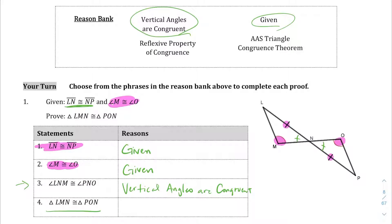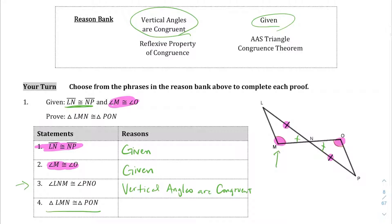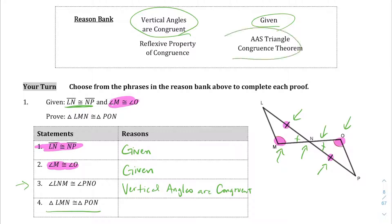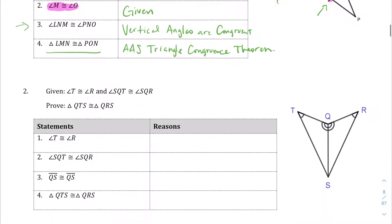And then we can conclude that triangle LMN and triangle PON are congruent because they have the same angle, angle, side — and in the case of the other triangle, angle, angle, side as well. So we're going to conclude with the angle-angle-side triangle congruence theorem.